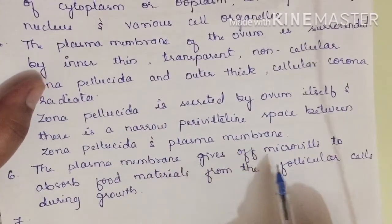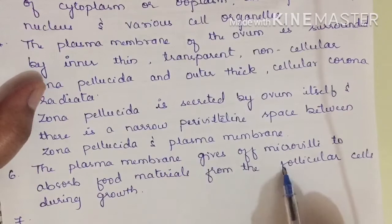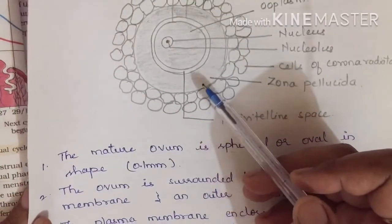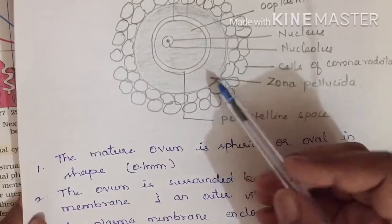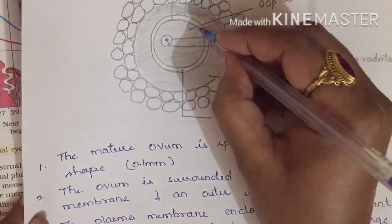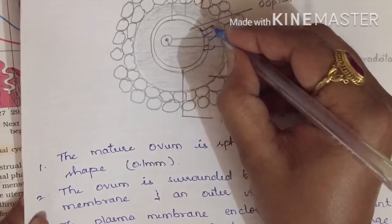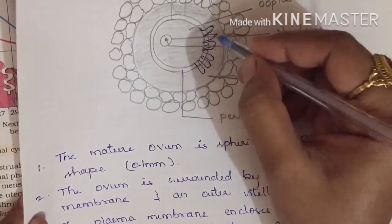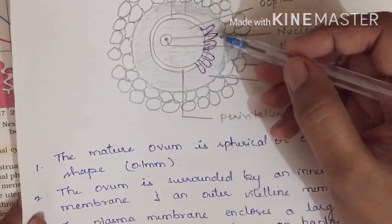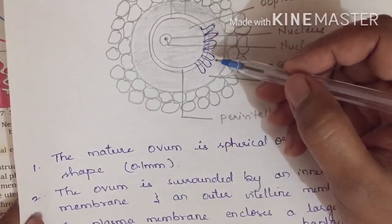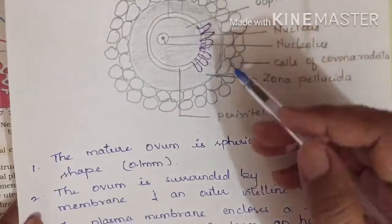The plasma membrane gives off microvilli to absorb food materials from the follicular cells during growth. Without nourishment, a cell cannot undergo a growth phase. For that reason, the plasma membrane starts to form microvilli — finger-like projections, similar to those found in the intestine — to absorb food materials from the follicular cells during the growth phase.